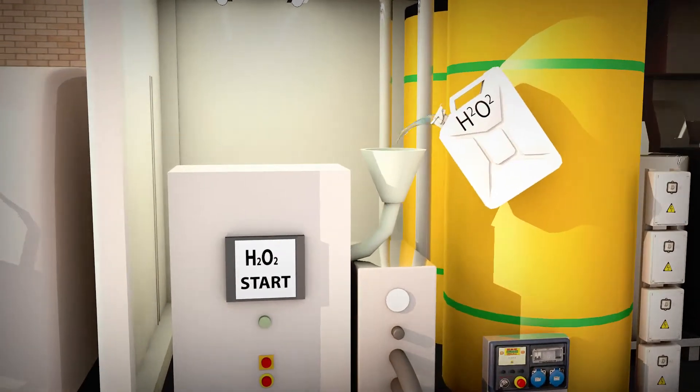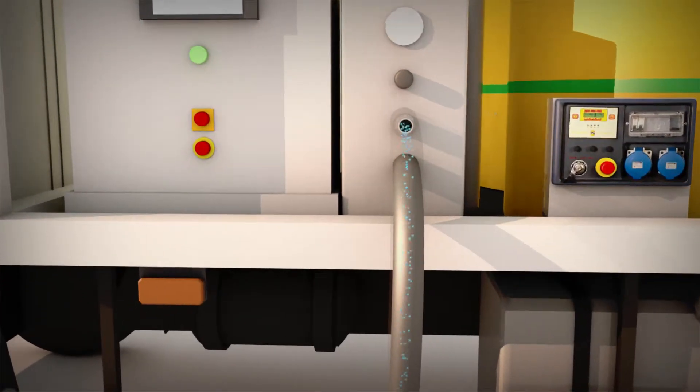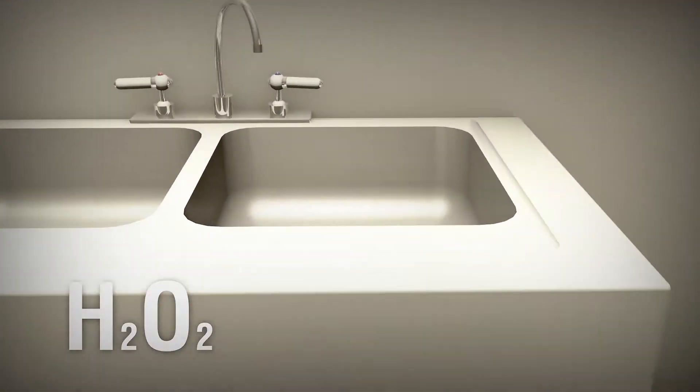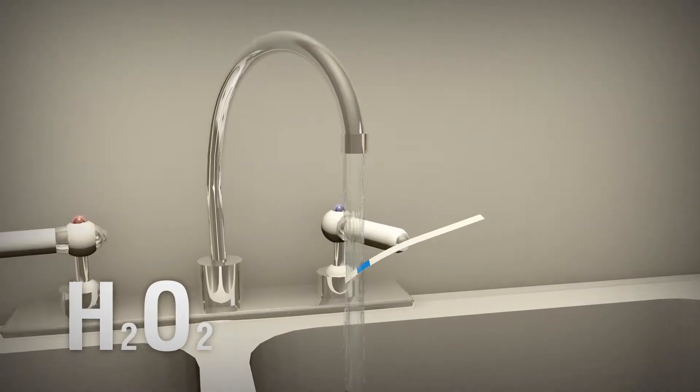Then we add hydrogen peroxide to the system. This is a biodegradable material, so it is very safe to use. With special strips, we can check whether there is enough H2O2 in the system.